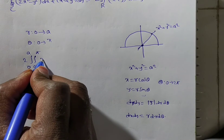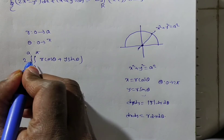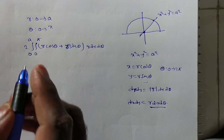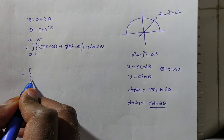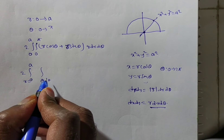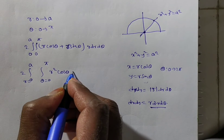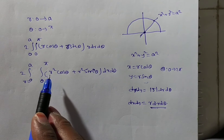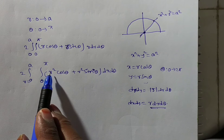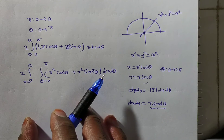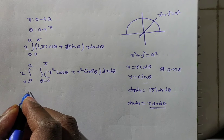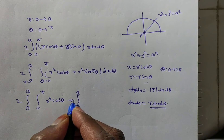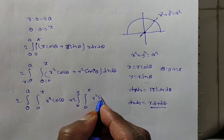So we have 2 times the double integral, with r from 0 to a and θ from 0 to π, of (x + y) · r dr dθ, substituting x = r cosθ and y = r sinθ. This gives 2 times the double integral of (r cosθ + r sinθ) · r dr dθ = 2 times the double integral of r²(cosθ + sinθ) dr dθ. Since the limits are independent, we can separate the integrals.